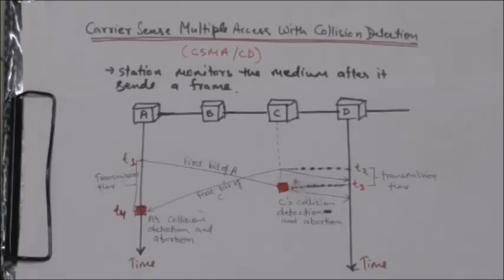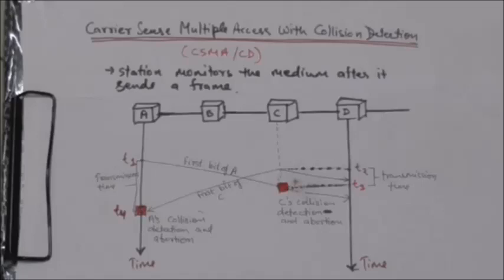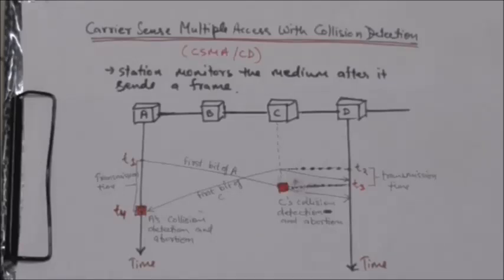The collision will occur sometime after time t2. Station C detects the collision when it receives the first bit of station A's frame, and it will immediately abort the transmission. Station A will detect the collision when it receives the first bit of station C's frame. Suppose station A detects the collision at time t4 — it will also abort the transmission.